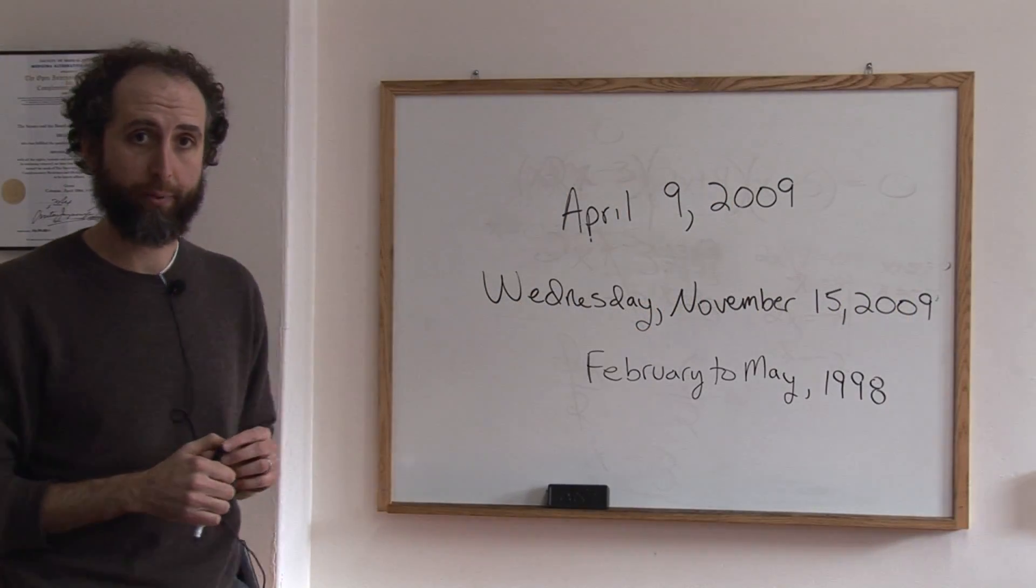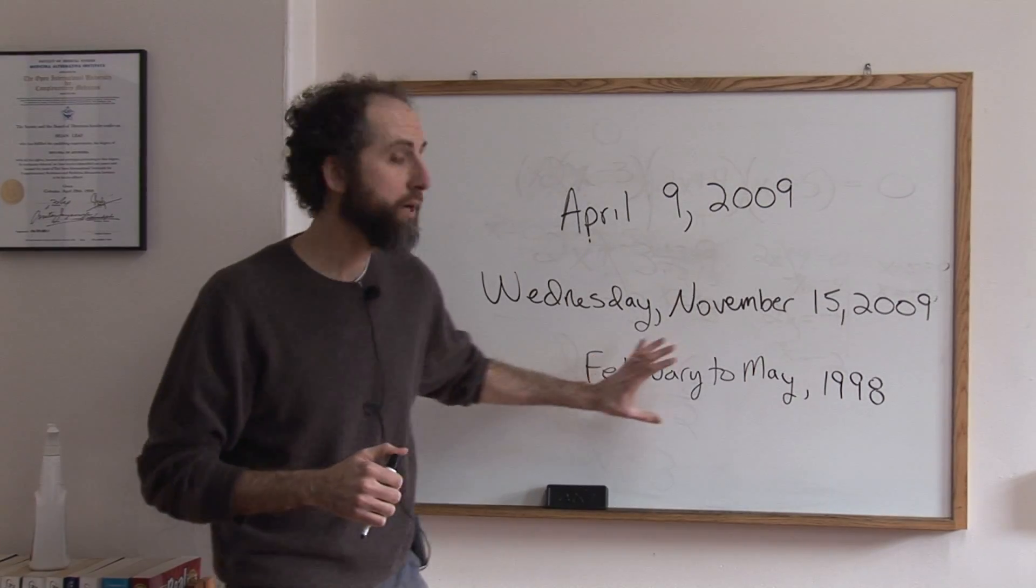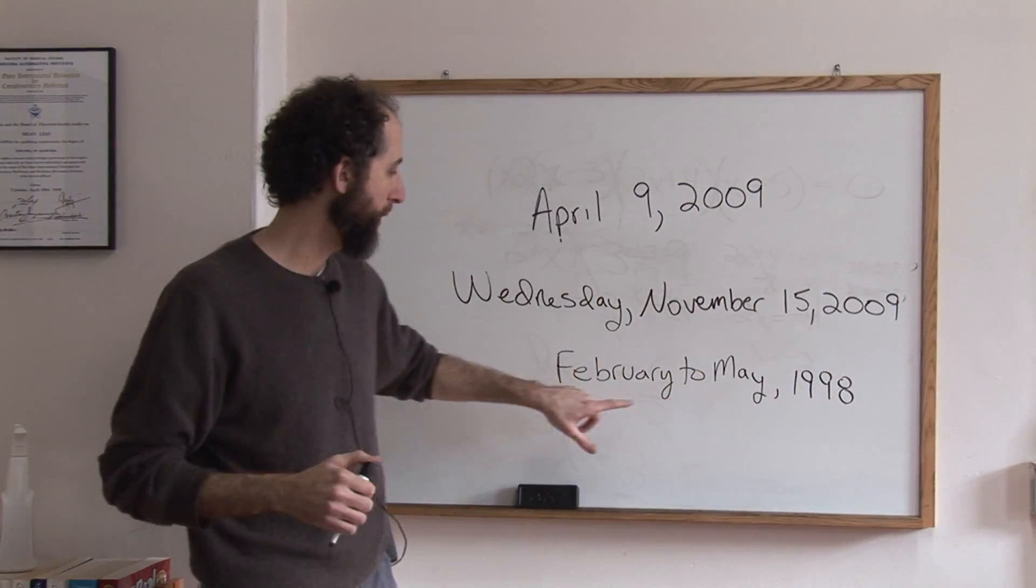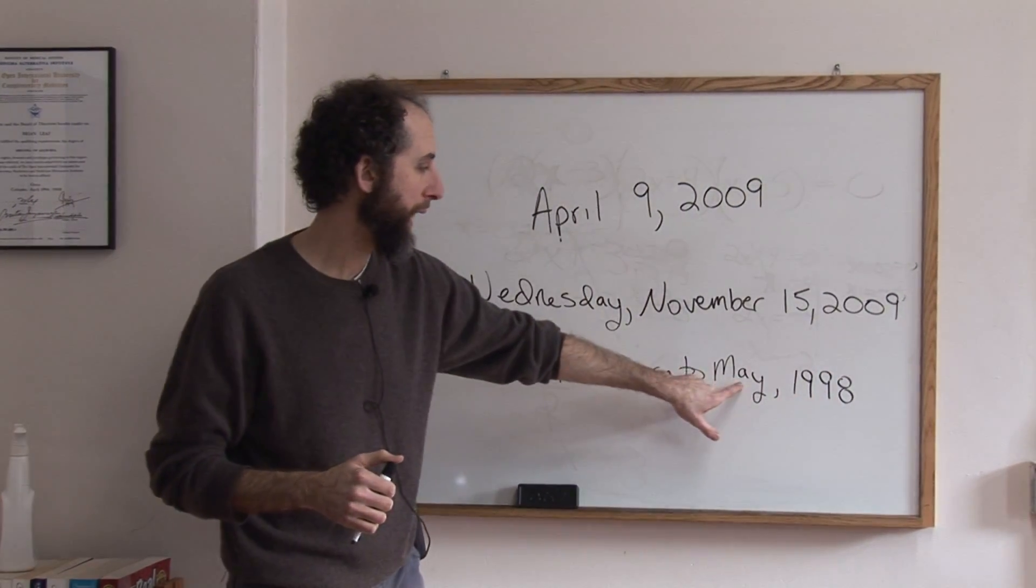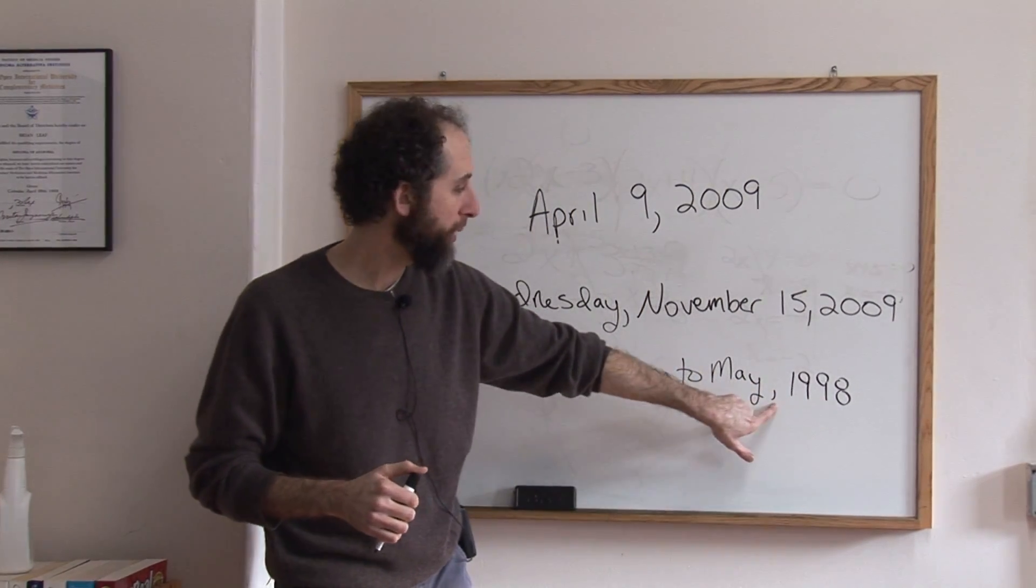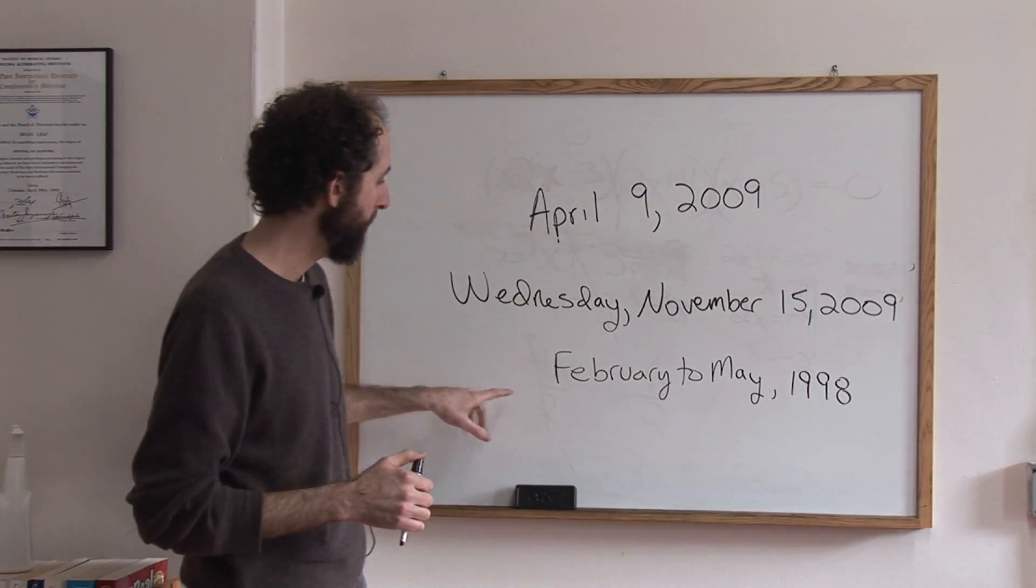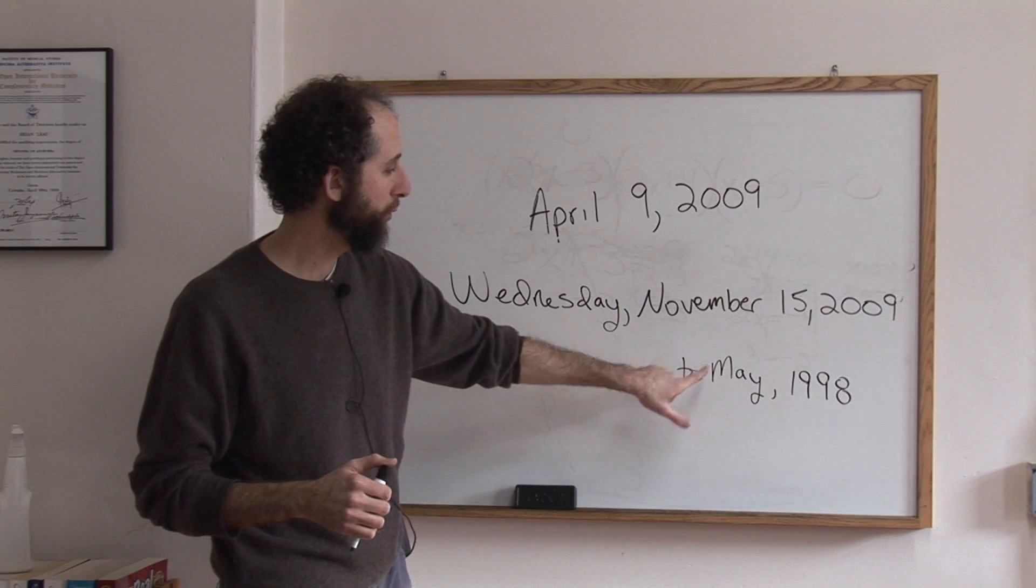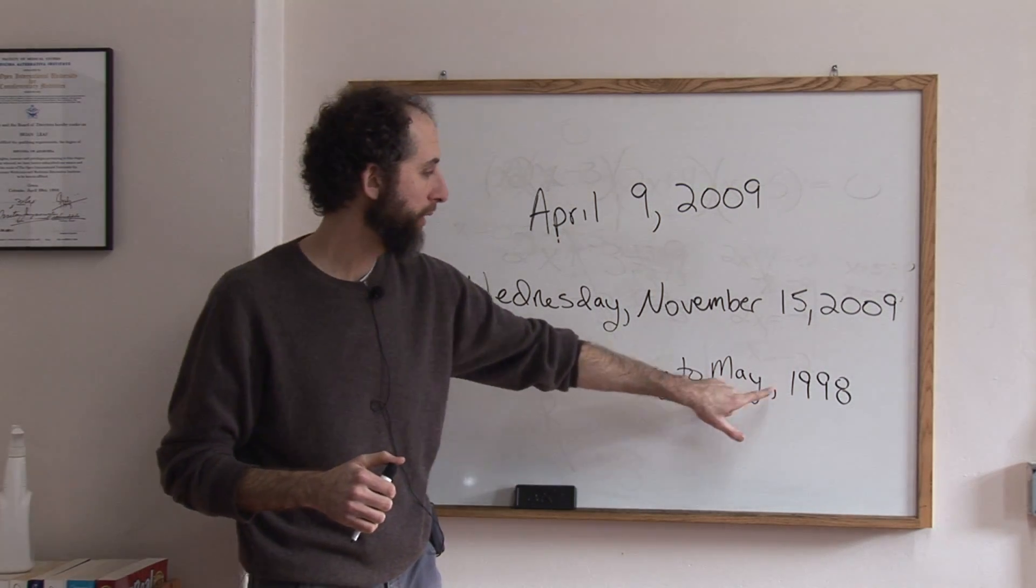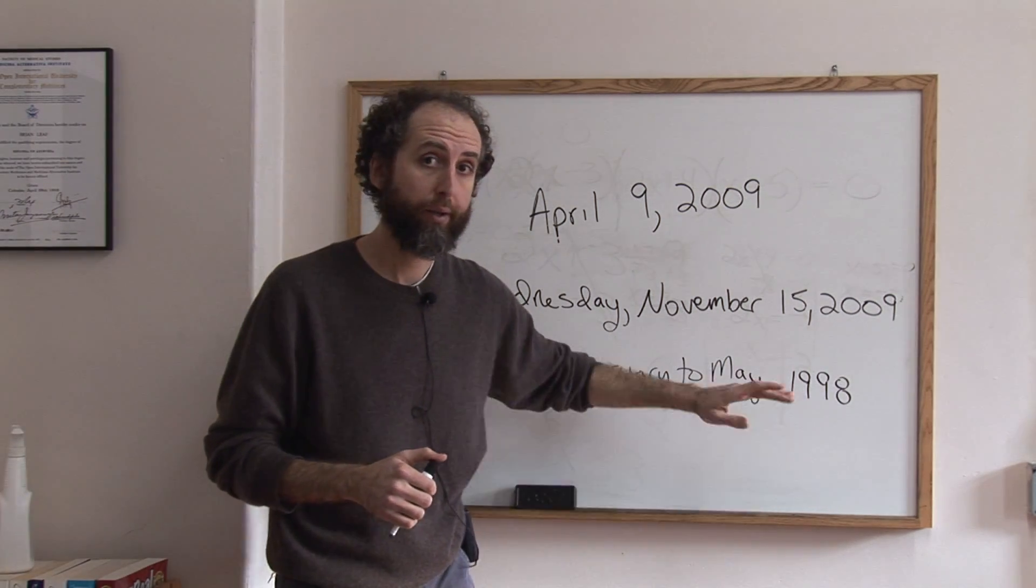Let's take a look at one more example. If you're talking about a period of time in your paper, let's say you wanted to write February to May, 1998, the comma would go here. You'd say February, space, to, space, May, comma, space, 1998.